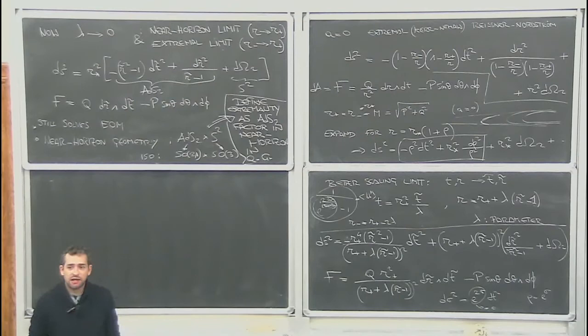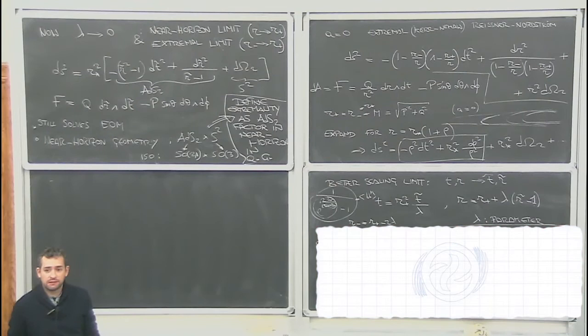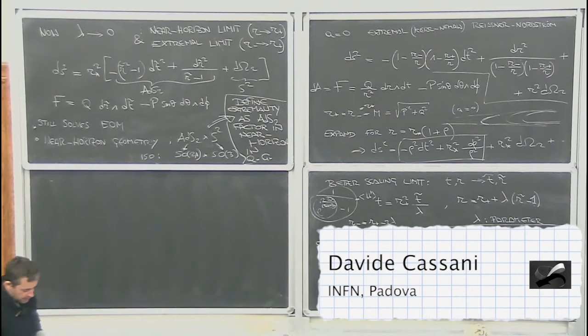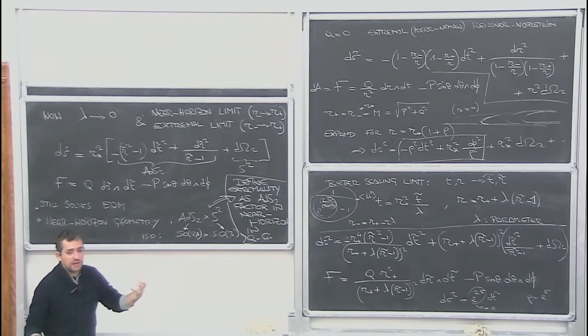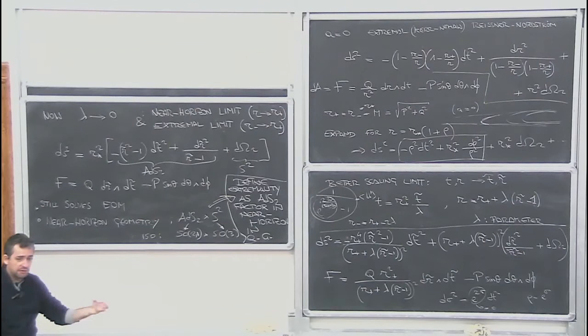Let's keep going. Is there any question about these latest things? There were many questions during the break, and they were all nice. Let me also make yet another comment about this new matrix that we have obtained. I repeat: it is a new solution to the Einstein equation, not the same solution we had before, but it has a precise meaning. It is the limiting near-horizon geometry for this extremal black hole.